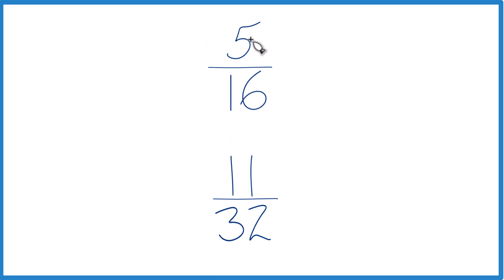One is just divide 5 by 16 on a calculator, get a decimal, divide 11 by 32, get a decimal.